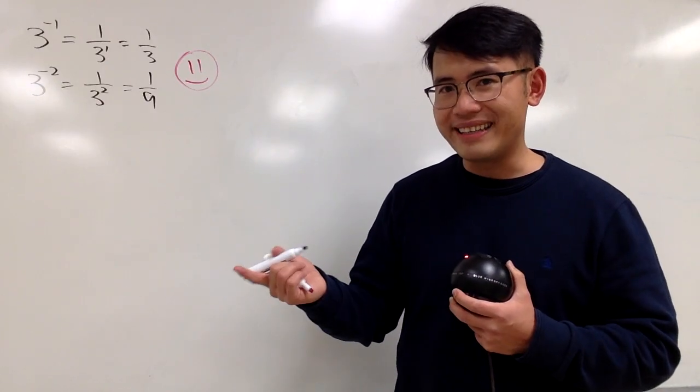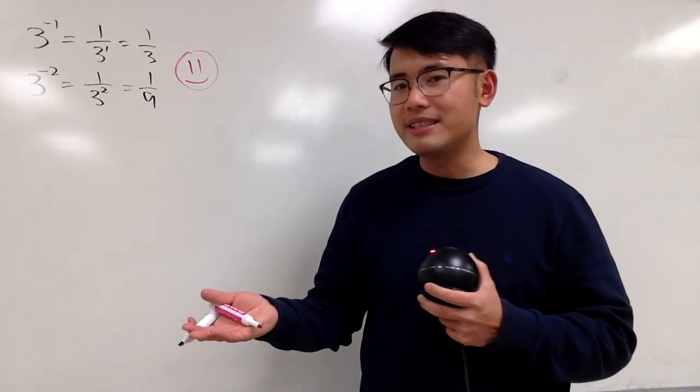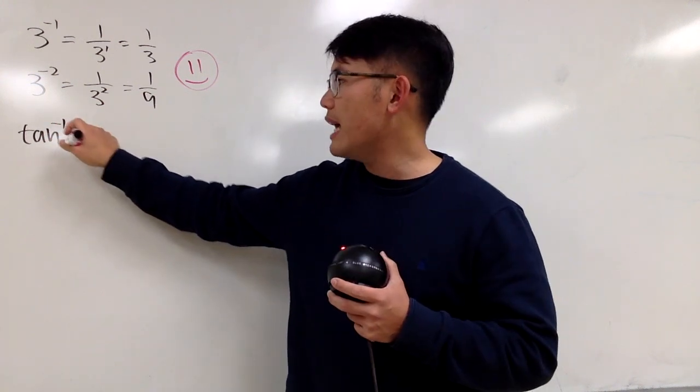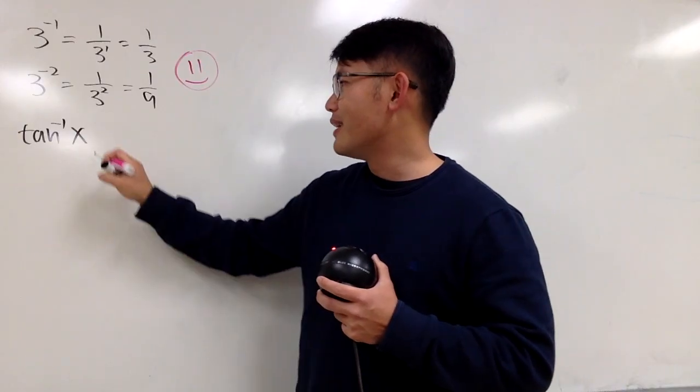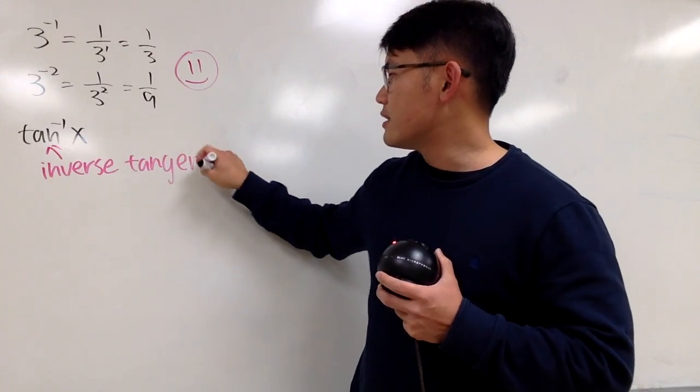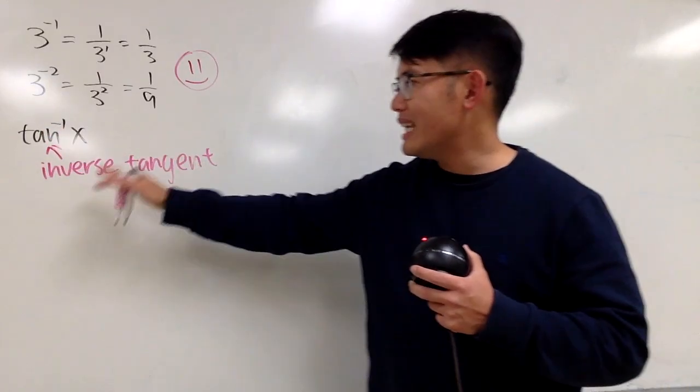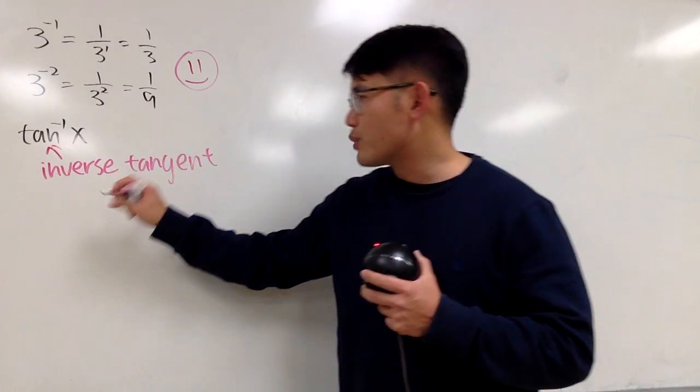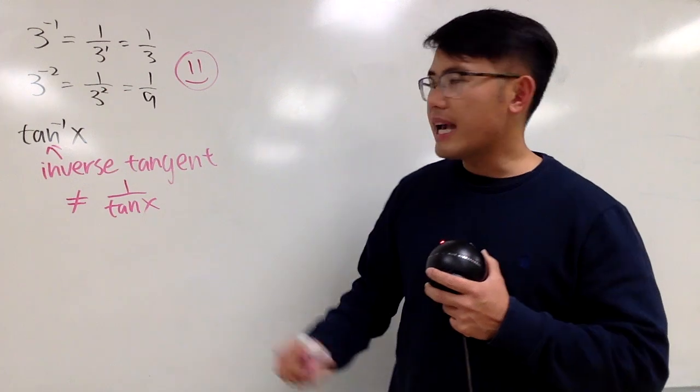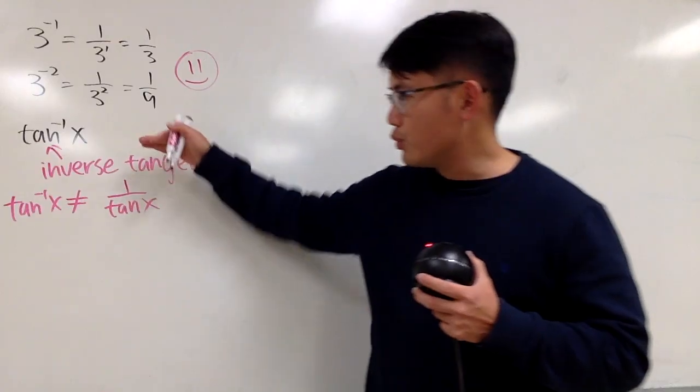But if you're talking about functions, and if you have the negative 1 somewhere, yeah, it's bizarre. Let me just use one of the trig functions as an example. Let me pick tangent. Suppose I have tan^-1(x). Well, this right here means what we call the inverse tangent. It's the same thing for sine with a negative 1, cosine with a negative 1, etc. They all mean the inverse trig functions. And let me just tell you, it doesn't mean you have 1 over tangent x.